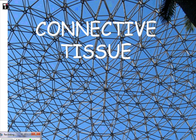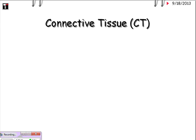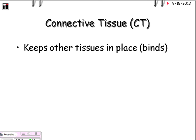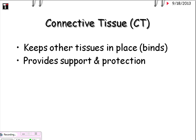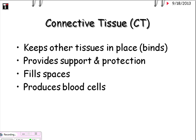Welcome to connective tissue lecture. Connective tissue has several different functions: it keeps other tissues in place, provides support and protection, and fills spaces. Depending upon what type of connective tissue it is, it produces blood cells and stores fat, and thus our energy.